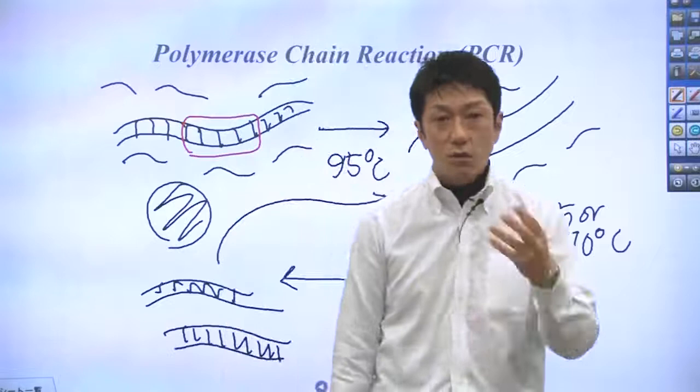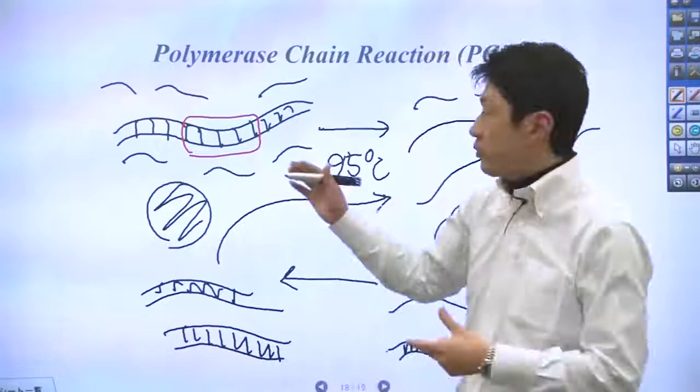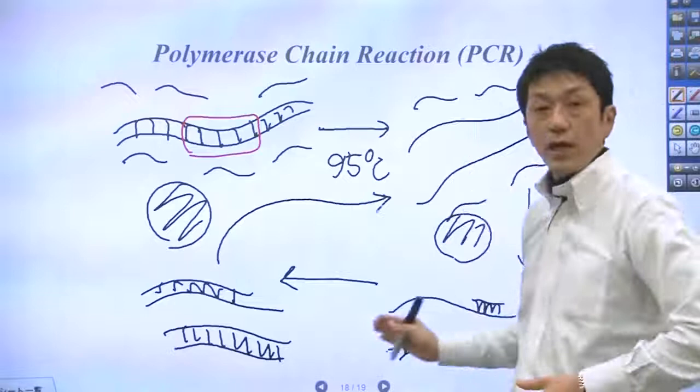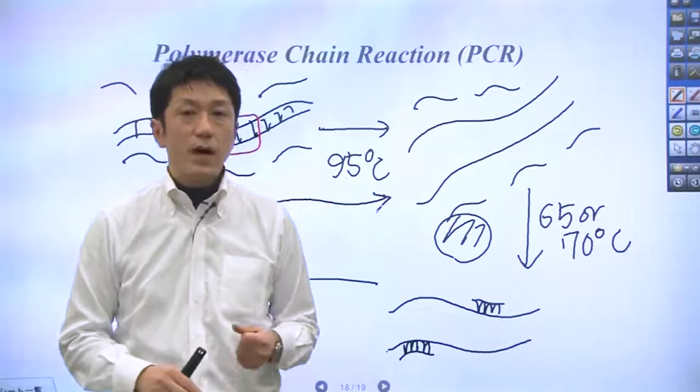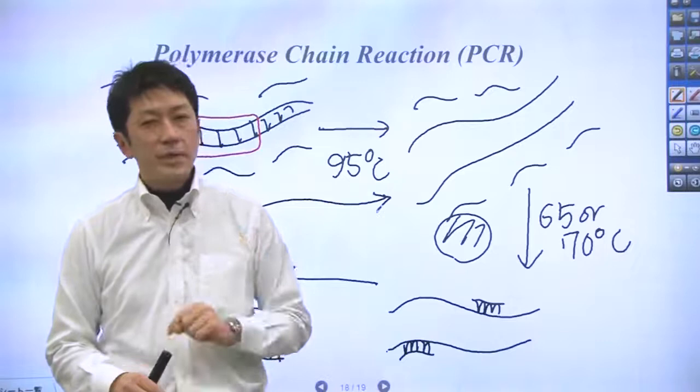The DNA portions bracketed by the two primers are amplified by repeating this process over and over again. If this process is repeated 30 times, the target DNA increases by 2 to the power of 30, that is, by about 1 billion times.